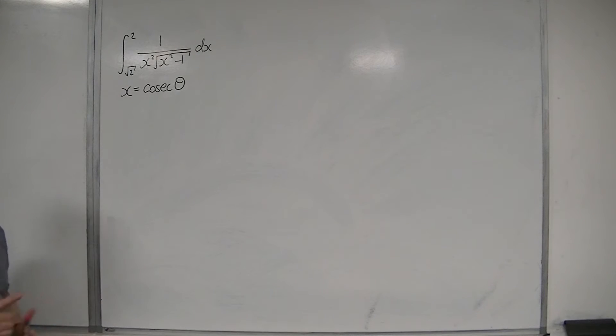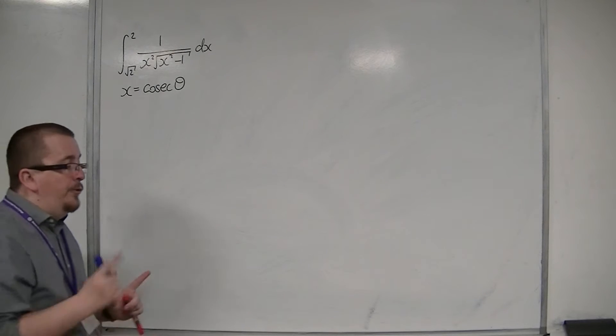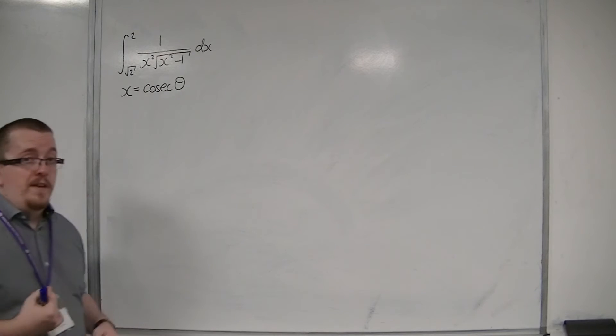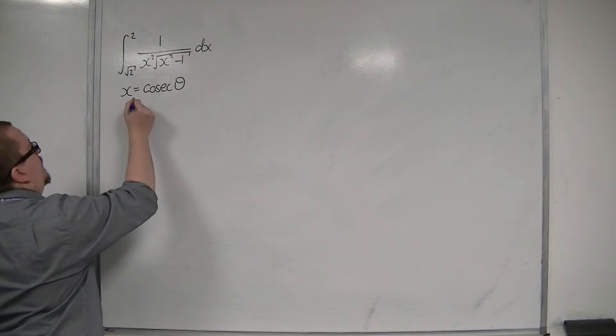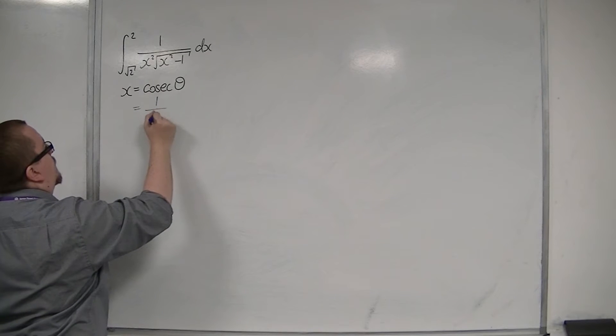So x is equal to cosec theta. Now cosec is 1 over sine, so this is 1 over sine.